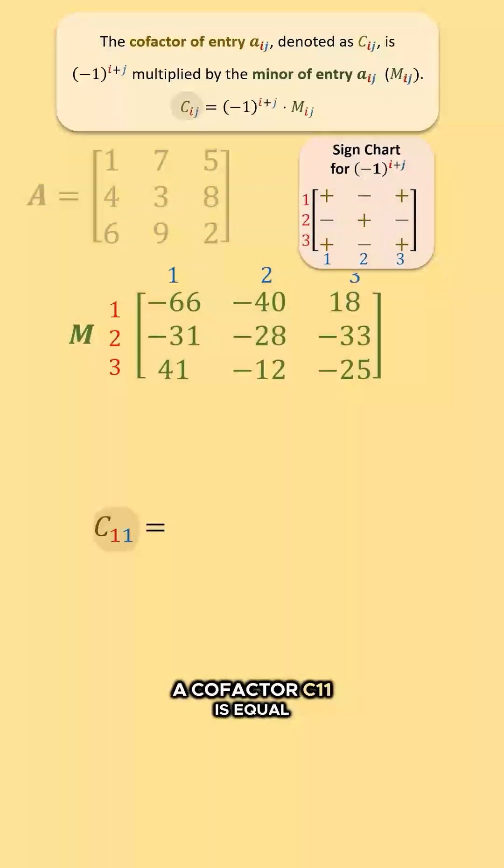Cofactor C11 is equal to positive 1 times capital M sub 11, which equals plus 1 times negative 66, which equals negative 66. If we are creating a cofactor matrix capital C, then C11 equals negative 66 goes in this position here.